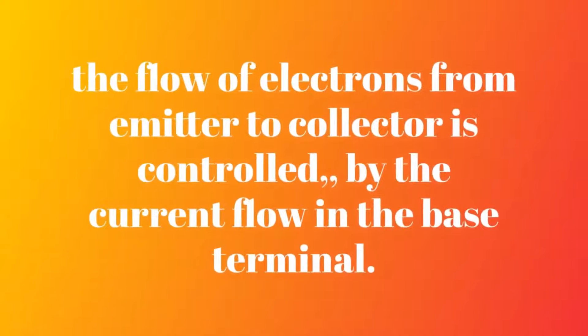From today you should know that the flow of electrons from emitter to collector is controlled by the current flow in the base terminal. That means that a small amount of current at the base terminal can make a large amount of current flow from emitter to collector.